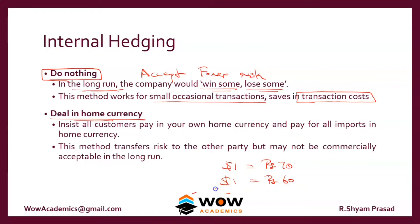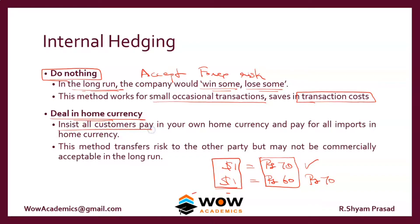What you can do instead is ask the foreign customer to pay you in your own currency. If they have to pay you 70 rupees, then irrespective of whatever the currency parity turns out to be, they will always pay you 70 rupees. This does not eliminate forex risk — it is still there — but you have shifted the forex risk from yourself to the foreign company. For all exports, ask customers to pay in your home currency; for all imports, pay in home currency.